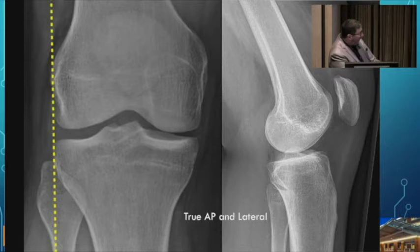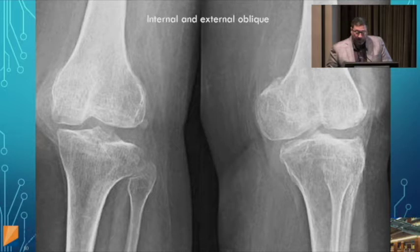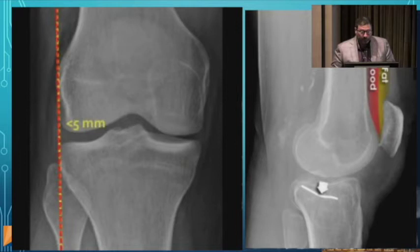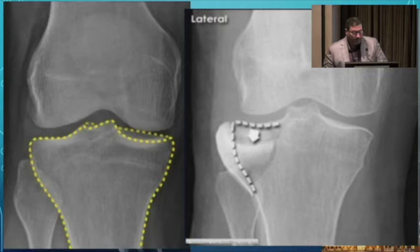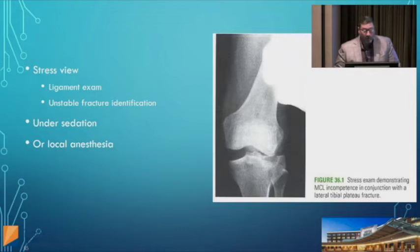The widening of the tibial plateau compared to the distal femur is an important finding. Lateral tibial plateau fractures usually occur from a valgus or knock-kneed stress, where the end of the femur acts as a battering ram and knocks down the joint surface of the tibia. CT scans are invaluable in the assessment of these injuries.